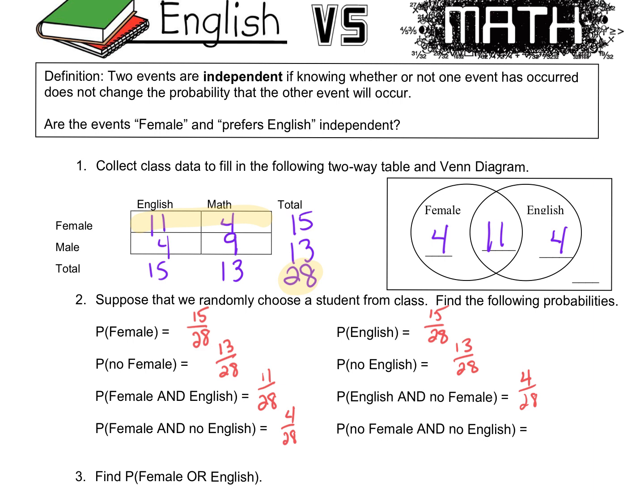You guys all knew this — this is review. We did this last week. This is 4.2 review. Question 2 and Question 3 are all from our notes last week from Section 4.2. Then the last one: probability of no female and no English. So no English, no female would be the score of males liking math, and that's 9 out of 28. That's how we can do the probabilities looking at the two-way table.